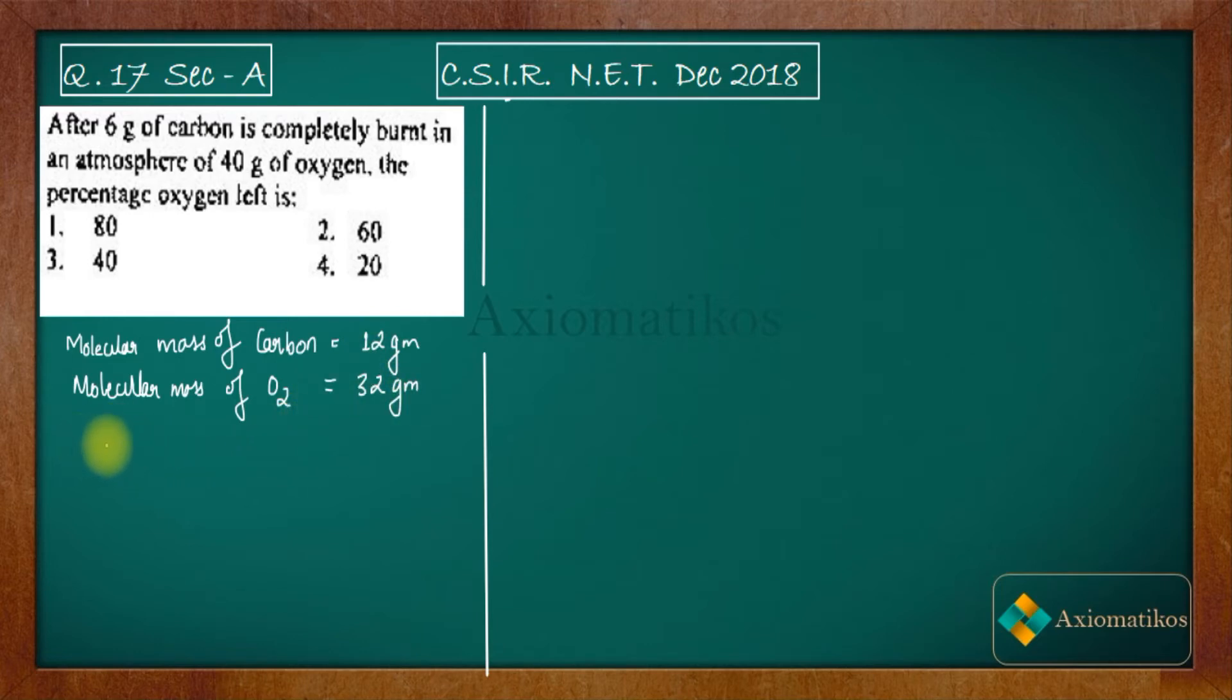So when one mole of carbon and one mole of oxygen combine together, then they form CO2. Now because your 6 grams of carbon is completely burnt in atmosphere, it means nothing will be left from the carbon part. Now see, one mole of carbon and one mole of oxygen is completely combined to form one mole of CO2.